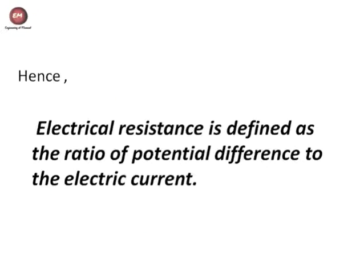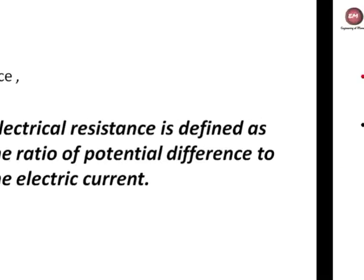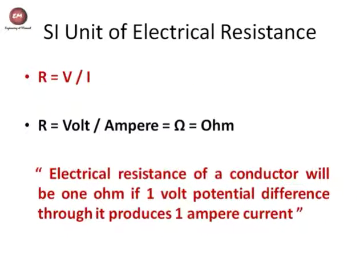So according to this equation, electrical resistance is defined as the ratio of potential difference to the electrical current. Now for the SI unit of electrical resistance: R equals V upon I. The SI unit of potential difference is Volt and the SI unit of current is Ampere, so R equals Volt upon Ampere, which equals Ohm. Therefore, the SI unit of electrical resistance is Ohm, denoted by the symbol Omega.